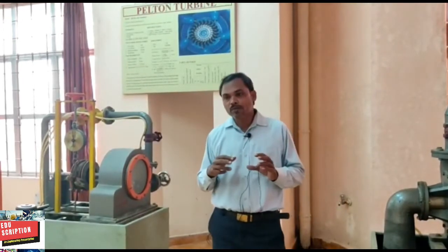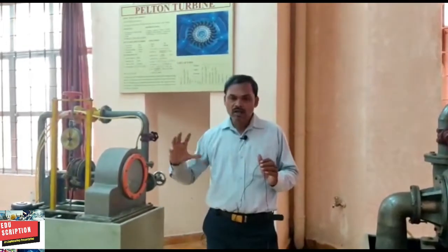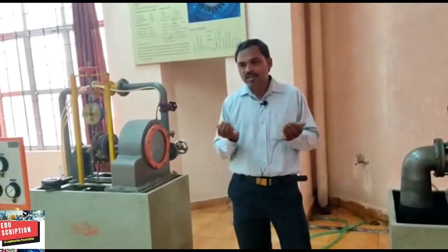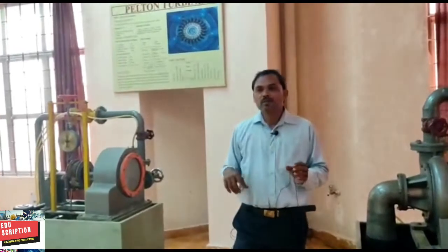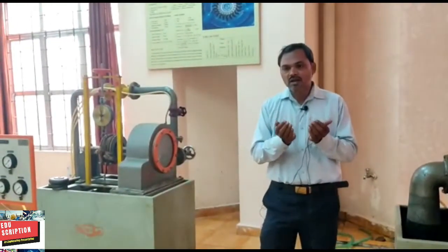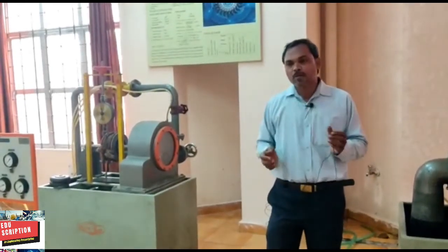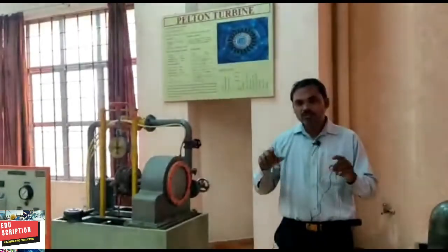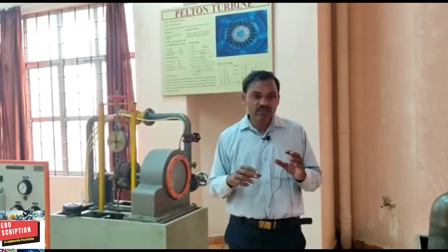The runner consists of a circular disc with a number of buckets evenly spaced around its periphery. The buckets are in the shape of double elliptical cups. Each bucket is divided into two symmetrical parts by a splitter. The jet of water impinging on the splitter gets divided into two equal parts and leaves the bucket with an angle of 165 degrees.